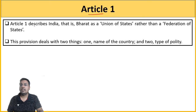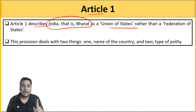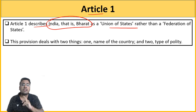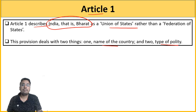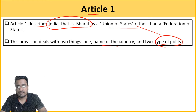Article 1 of the constitution names our country — it describes India that is Bharat, and defines it as a Union of States, not federation of states. The difference between federation and union is that in a federation, states have the power to secede from the country. Article 1 deals with two things: the name of the country and the type of polity — our state is a Union of States.